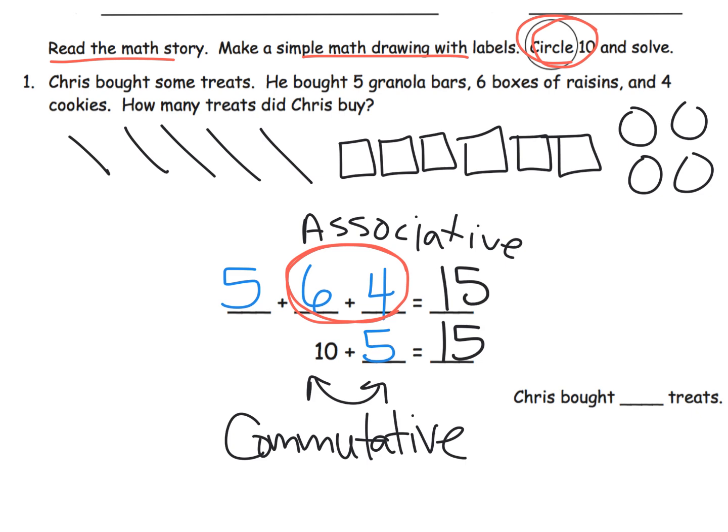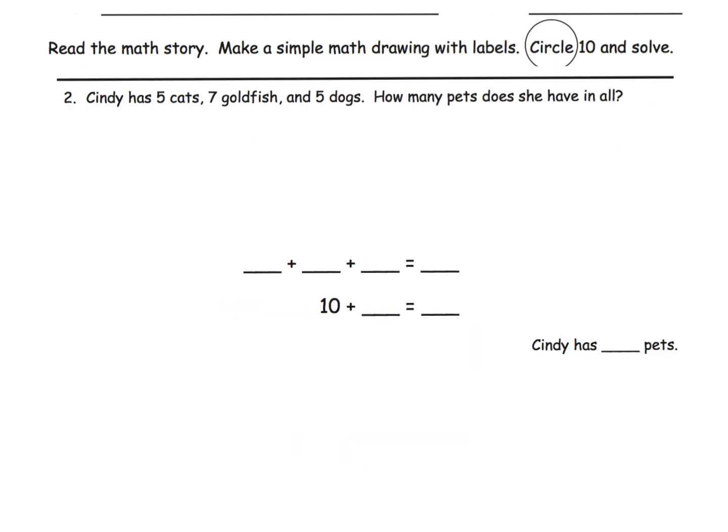And then because we're putting these two numbers together as opposed to putting five and six together, once we group the numbers, that's called the associative property. And then when we change the order, that's called the commutative property. And that's perfectly fine for our students to hear those words. Ten plus five is fifteen. That means five plus six plus four is fifteen. So Chris bought fifteen treats. So another example, Cindy has five cats, seven goldfish, five dogs. I'm going to leave the drawing up to you parents and teachers. We're not looking for awesome drawings, just representations. Now the idea is how many pets does Cindy have in all? So we have five cats, seven goldfish and five dogs.